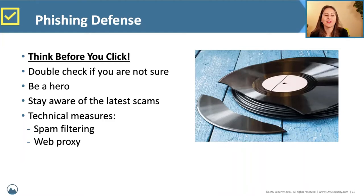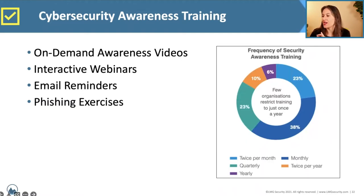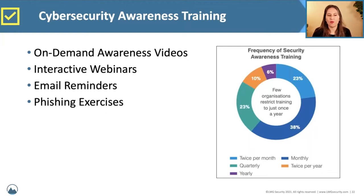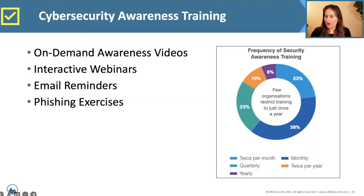You can take technical countermeasures: make sure your spam filter is effective, use a web proxy, and prioritize cybersecurity awareness training. On-demand awareness training is especially valuable with so many people working remotely — people can watch it in 5, 10, or 15-minute chunks. Interactive webinars, email reminders, and multiple methods keep cybersecurity top of mind. Annual training is no longer enough; the industry moves too quickly. We're seeing many organizations move to monthly or even twice-per-month training, which is very effective.